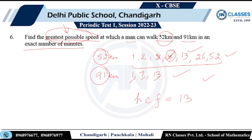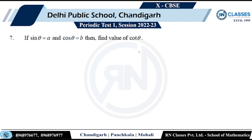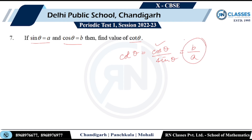Question 7: Given sin θ = a and cos θ = b, evaluate cot θ. Cot θ is directly related to cos and sin: it is cos θ divided by sin θ. Substituting, cos θ = b and sin θ = a, so the answer is b by a.